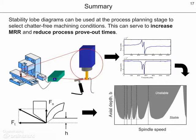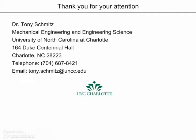To summarize, we've learned that stability lobe diagrams can be used at the process planning stage in order to select chatter-free machining conditions. The requirements are the tool point frequency response function and the cutting force model through cutting force coefficients. Given this information and the stability lobe diagram, you can increase material removal rates and reduce the process prove-out times for new machining operations. Thank you for watching, and please feel free to contact me if you have additional questions.